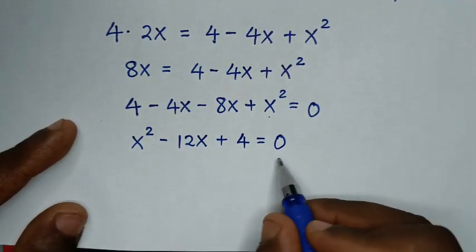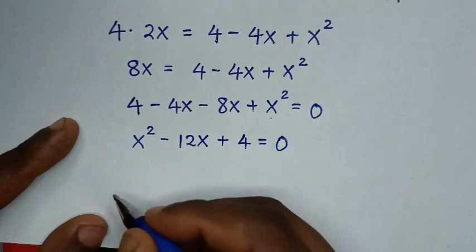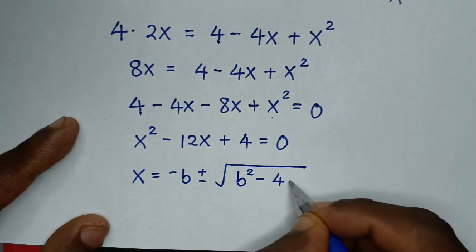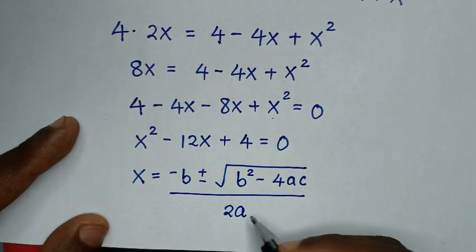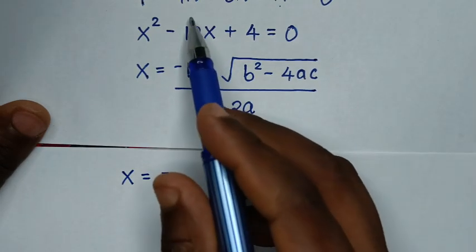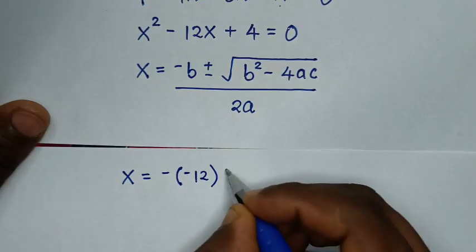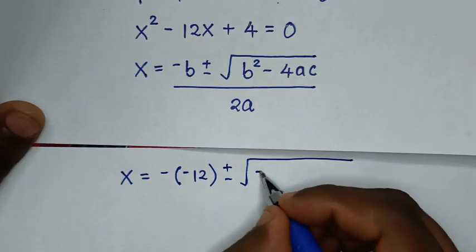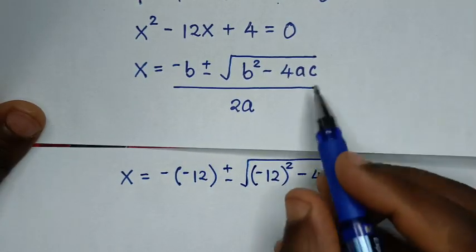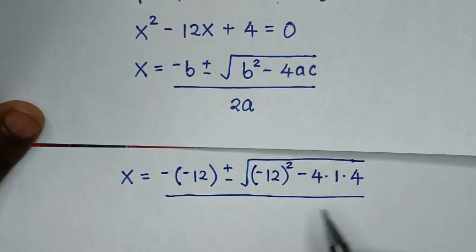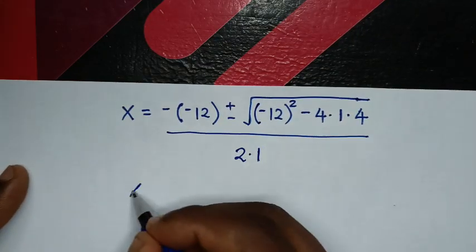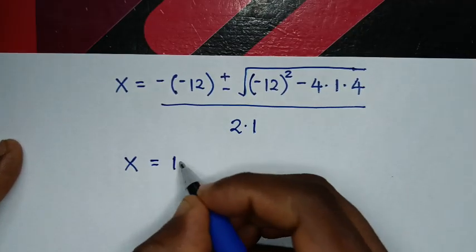We solve this quadratic equation using the quadratic formula: x = (−b ± √(b² − 4ac)) / 2a. Here, b is the coefficient of x which is −12, a = 1, and c = 4. So: x = (−(−12) ± √((−12)² − 4·1·4)) / (2·1).